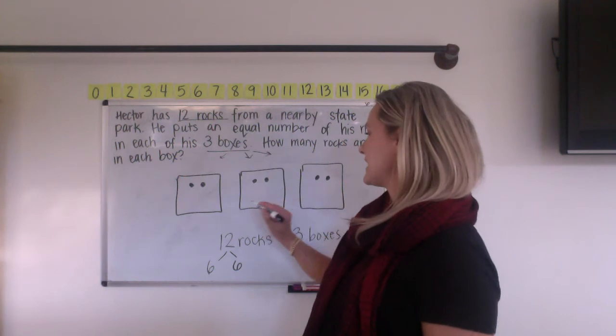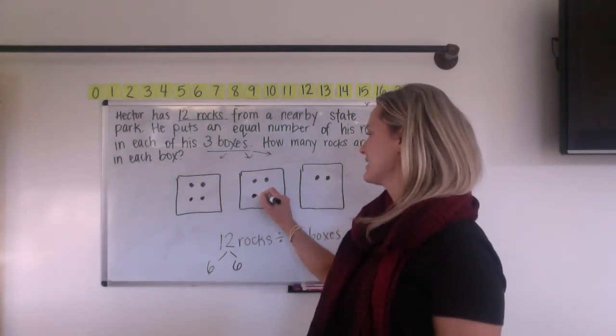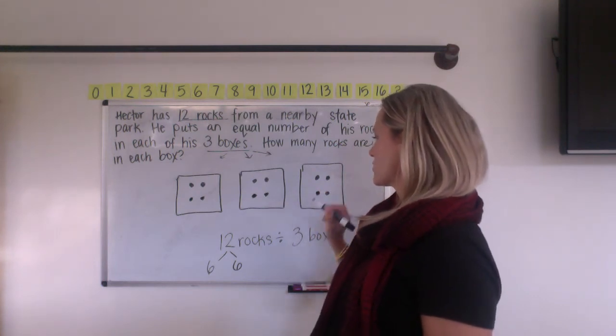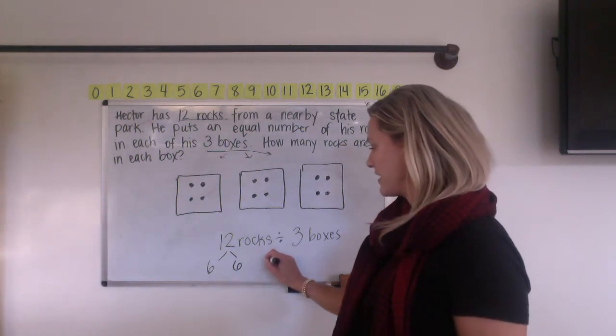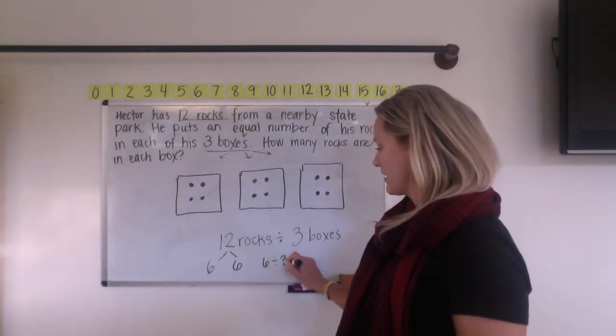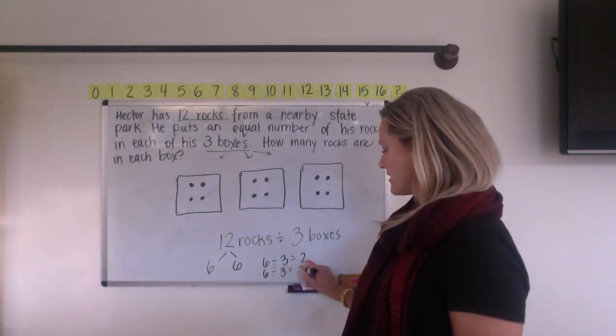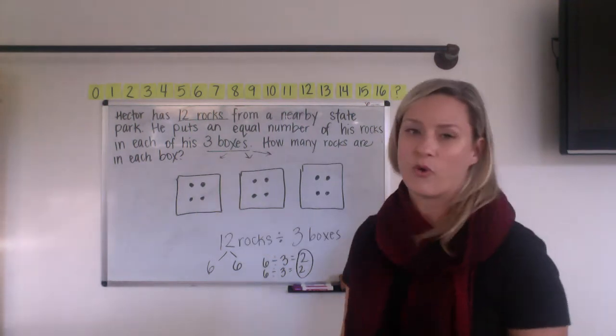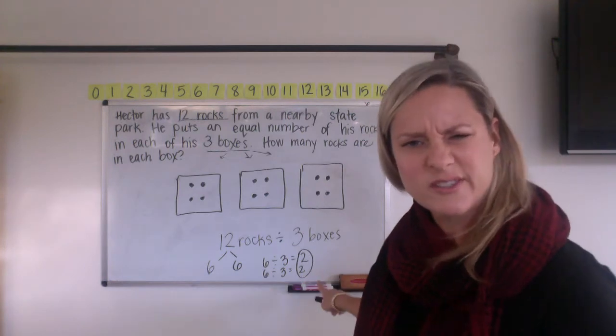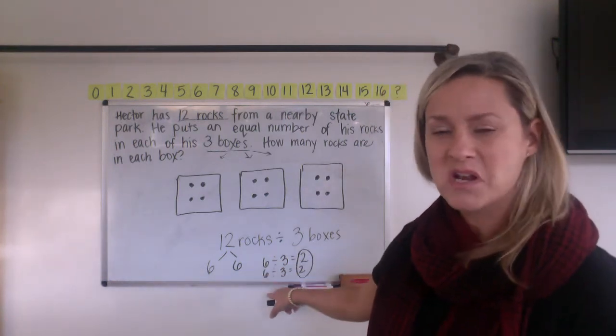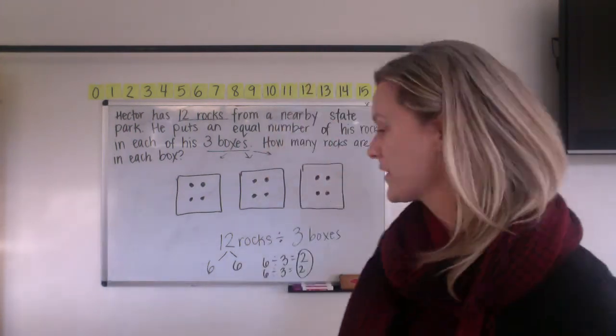So we've got two, four, six, eight, 10, 12. So you could do that and you could realize that six divided by three is two. And then we had to do that again. Six divided by three is another two. And the answer is four rocks per box. If this part doesn't make sense to you, do you have to worry about that? No. If this picture is making sense to you, we're in good shape.